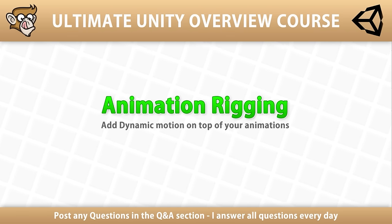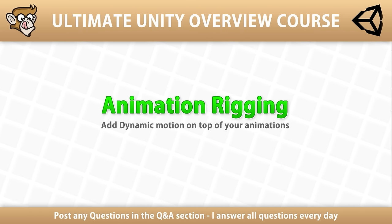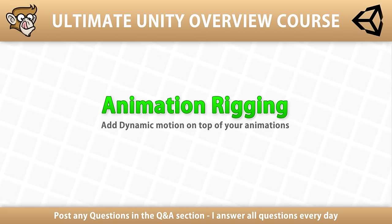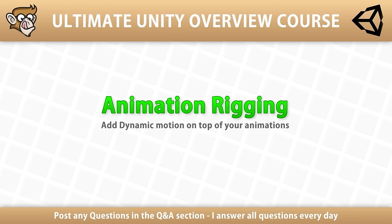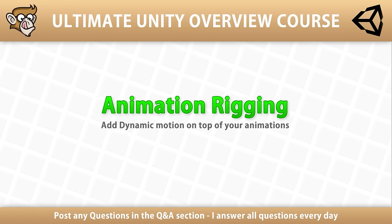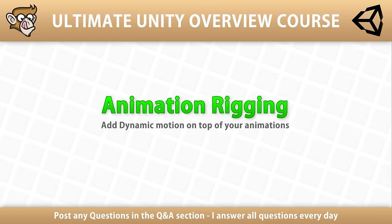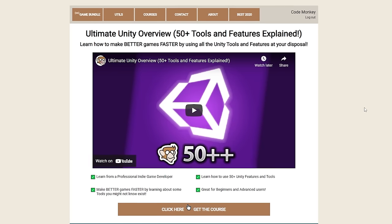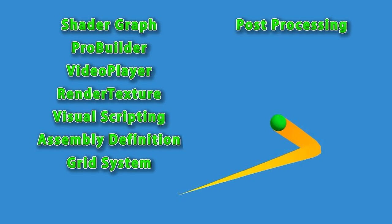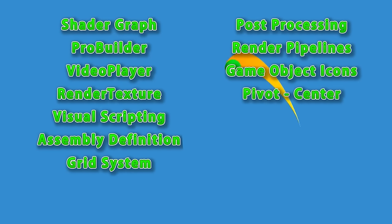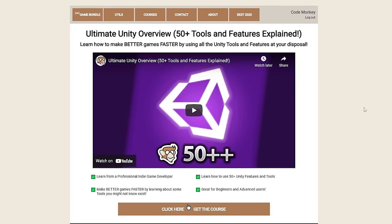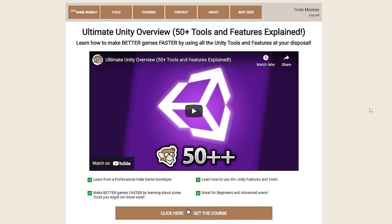Alright, so that's the Animation Rigging Package. As you can see, it's full of features and is perfect for when you want to apply dynamic modifications to your animations — perfect for dynamic foot placement, aiming exactly at where the player is aiming, grabbing a moving object, or making a character touch the door while going through it. This is an excellent package that will make all your animations feel much more natural. This was a lecture from my Ultimate Unity Overview course — there's lots more explaining things like Shader Graph, Animation Avatar, the Video Player and so on. Go ahead and get the full course and learn how to master all of the Unity tools and features to help you make better games faster.